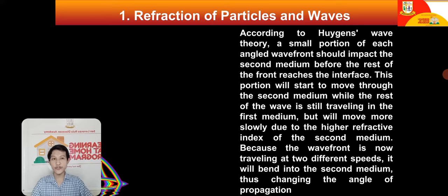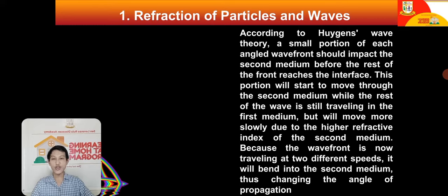This portion will start moving through the second medium while the rest is still traveling in the first medium, but will move more slowly due to the higher refractive index of the second medium. Because the waveform is now traveling at two different speeds, it will bend into the second medium, thus changing the angle of propagation. Refraction — when light passes through different media — causes bending or slowing of light speed.